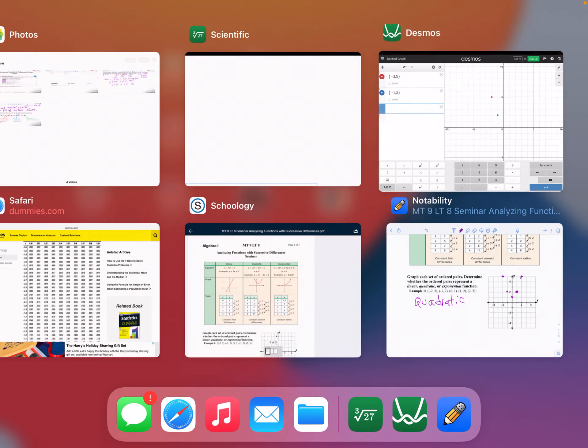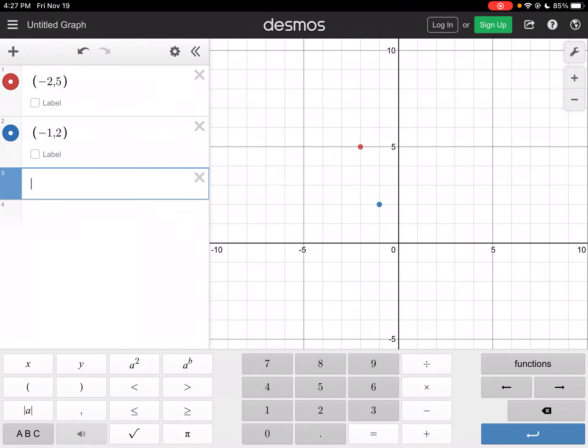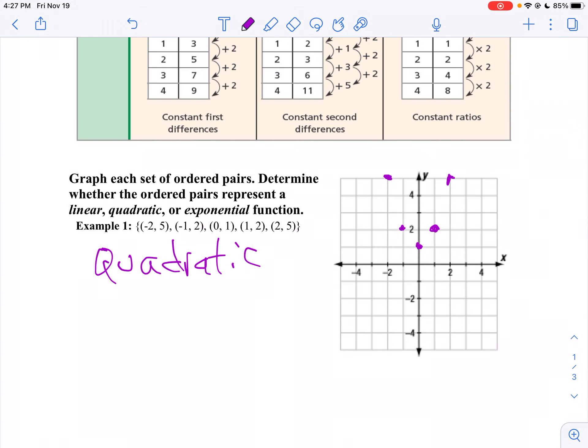There's my second point. My third point is 0 and 1. So I'll graph the points 0, 1.